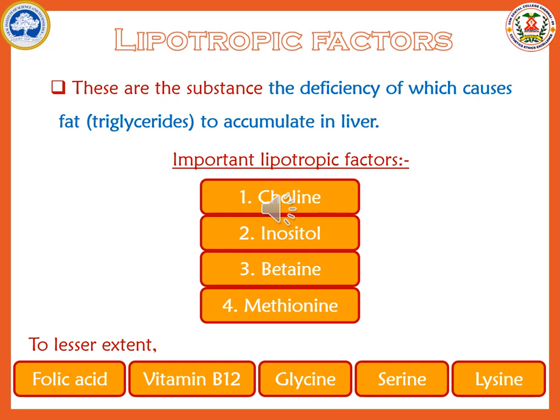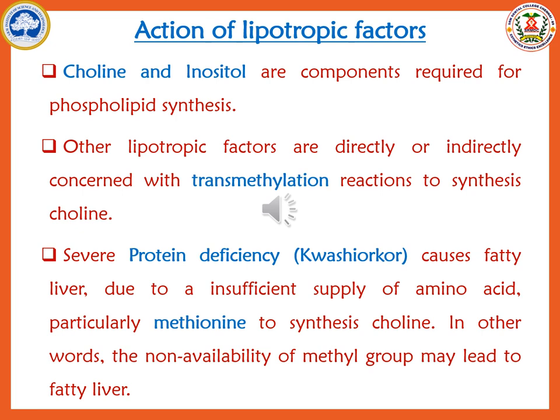Now we come to lipotropic factors, which are mainly asked in MCQs and may also be asked along with fatty liver for five-mark questions. Deficiency of lipotropic factors leads to accumulation of triacylglycerol in the liver, causing fatty liver. The important lipotropic factors are choline, inositol, methionine, and betaine. To a lesser extent, folic acid, vitamin B12, glycine, and lysine can also act as lipotropic factors. Choline and inositol are the main components required for the synthesis of phospholipid, which in turn is required for the synthesis of effective nascent VLDL to transport triacylglycerol from the liver to peripheral tissues.